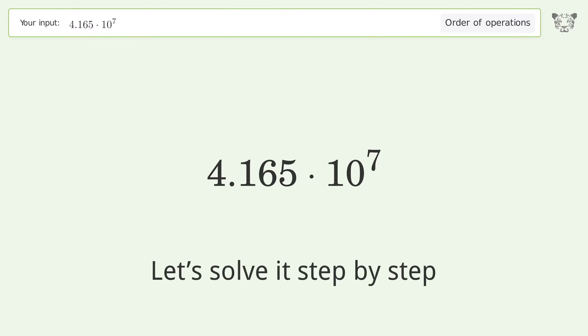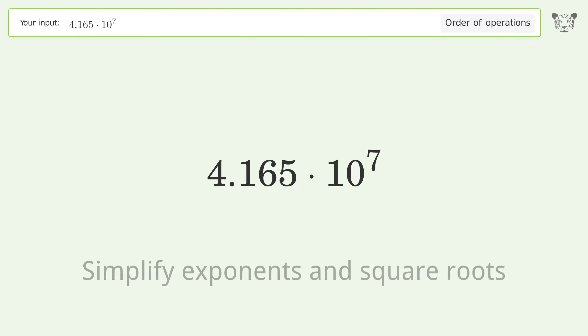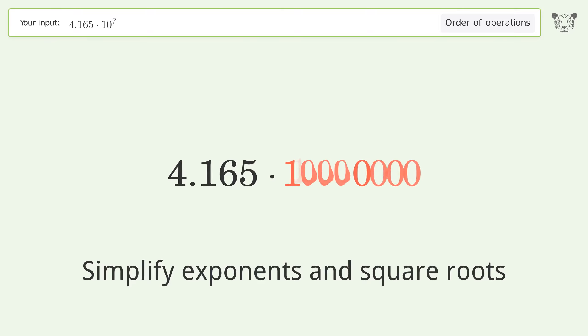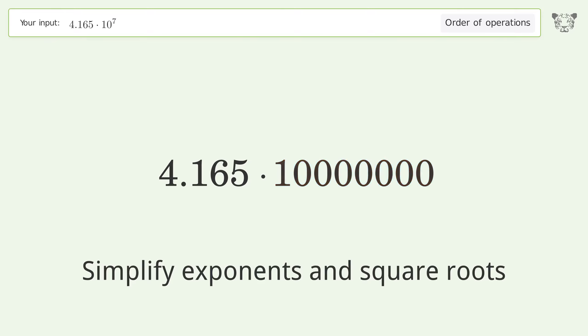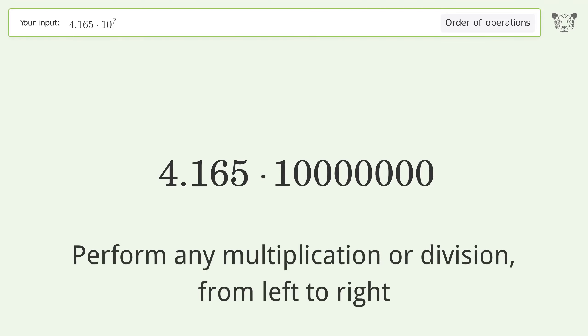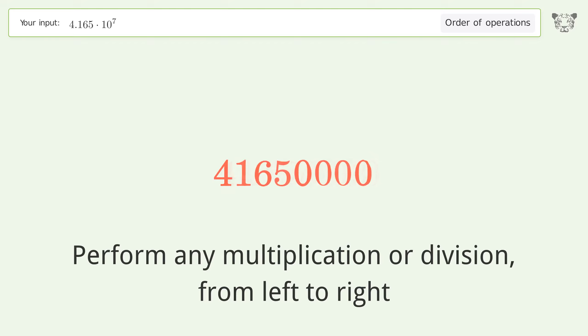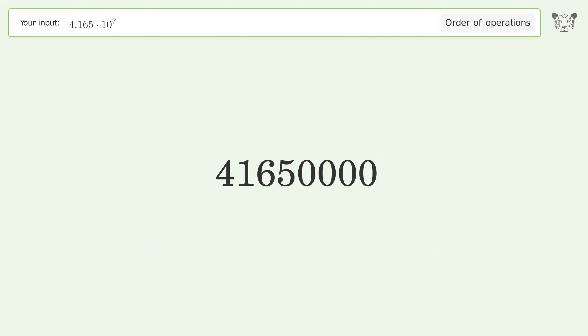Let's solve it step by step. Simplify exponents and square roots: 10 to the power of 7 equals 1. Perform any multiplication or division from left to right: 4.165 times 1 equals, and so the final result is 41,650,000.